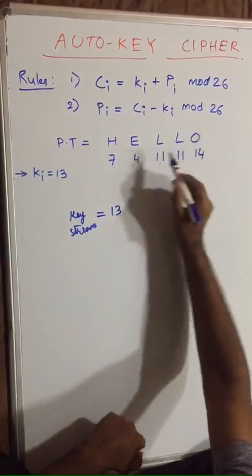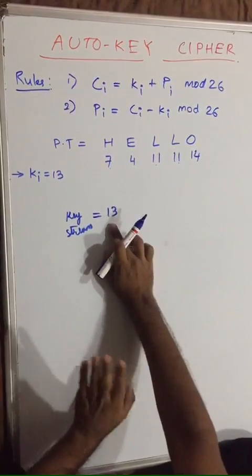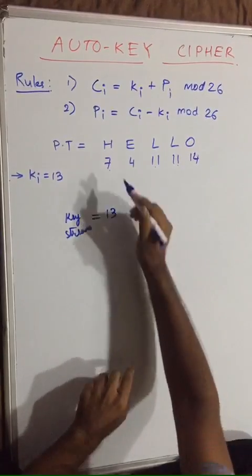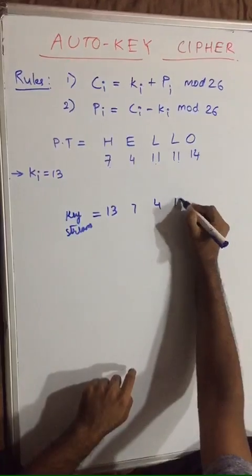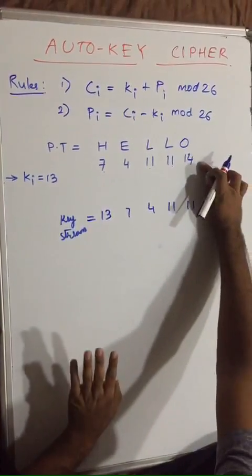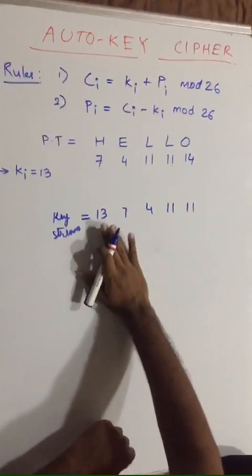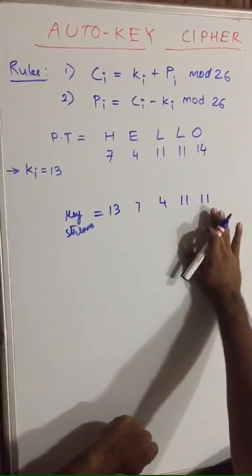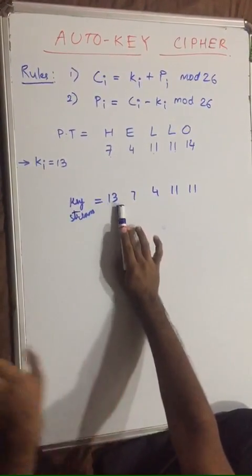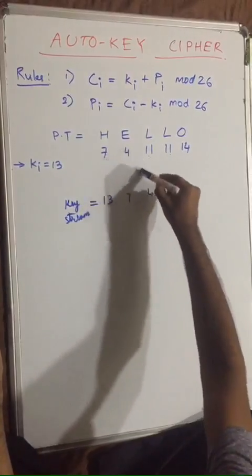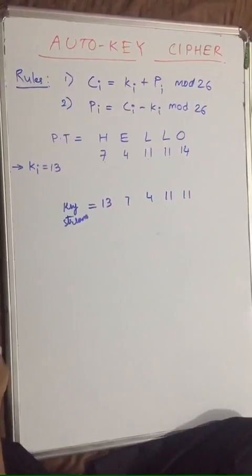The size of the plaintext is 1, 2, 3, 4, 5. We have already placed one, we have to put four other values. Starting from 7, 4, 11, and 11. Though 14 is remaining, just forget about it, we won't be using it. So our key stream is 13, 7, 4, 11, and 11. Basically what we did here is we placed the 13 as is and we just shifted all these values and made our key stream.